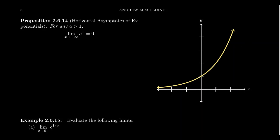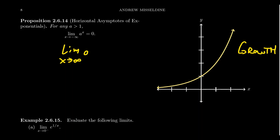If we have an exponential function whose base a is greater than one, this will be a growth exponential function — it'll be increasing along its domain. In that situation, if you take the limit as x approaches infinity, a to the x will equal infinity, and it'll actually be growing very rapidly, much faster than any power function.